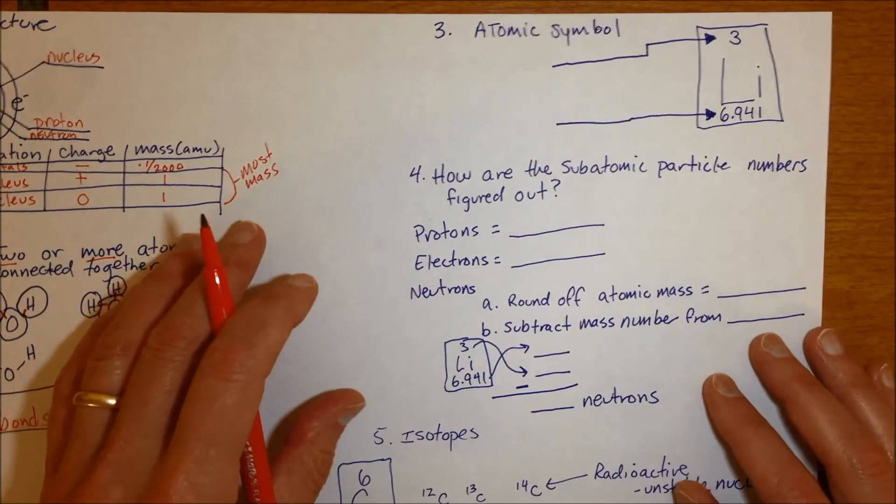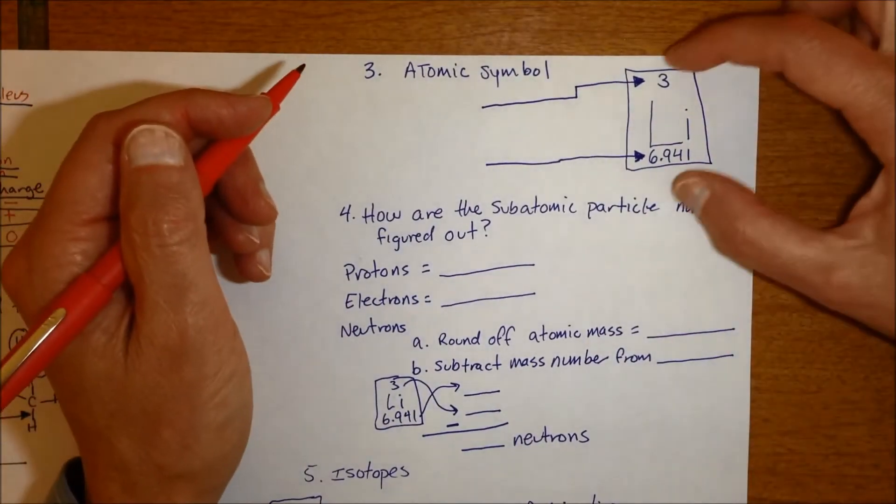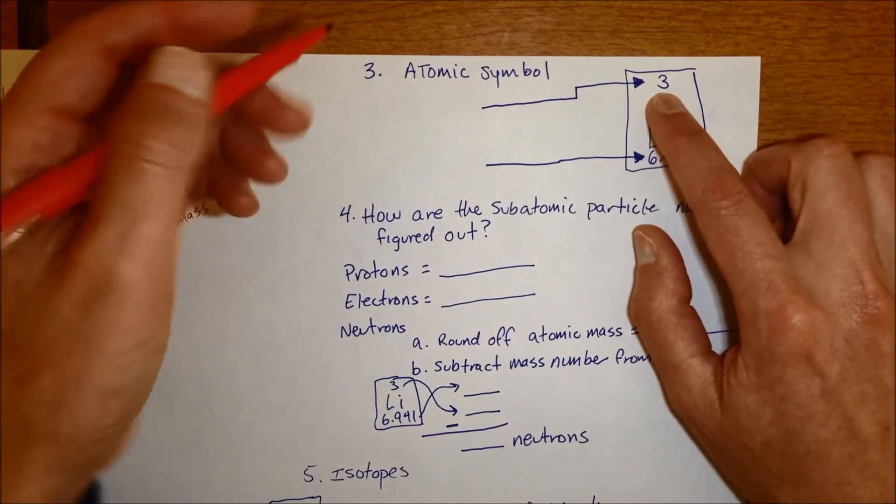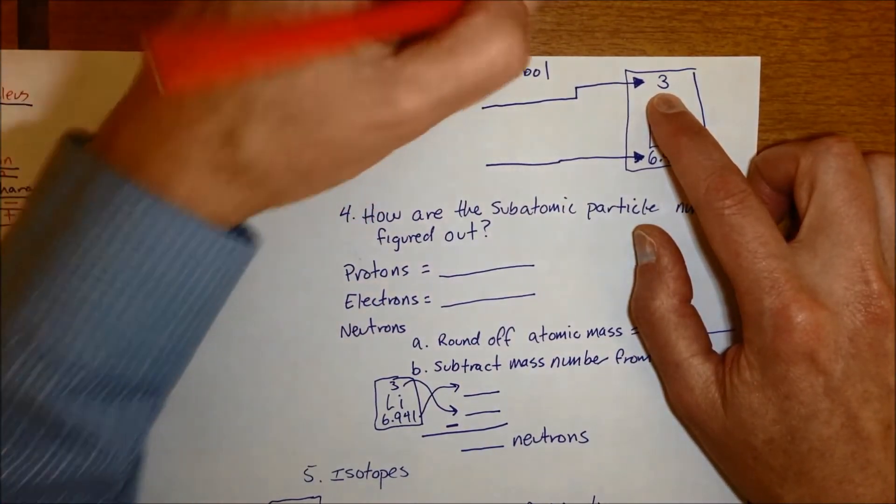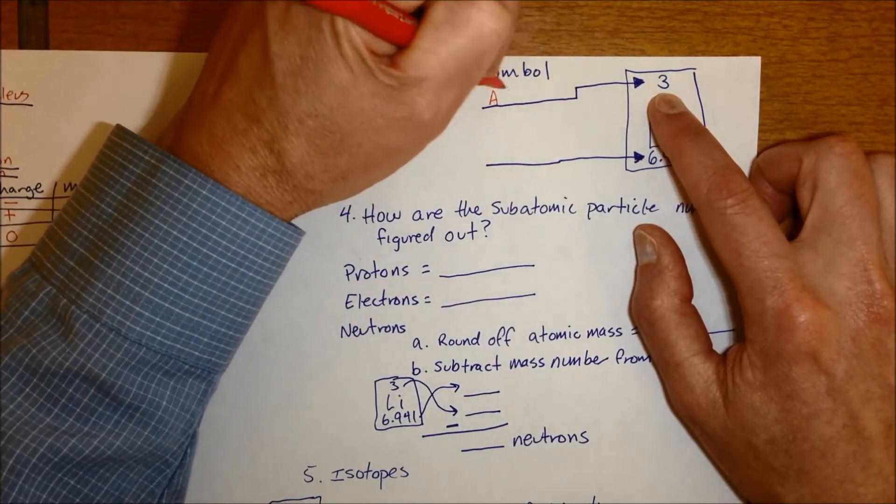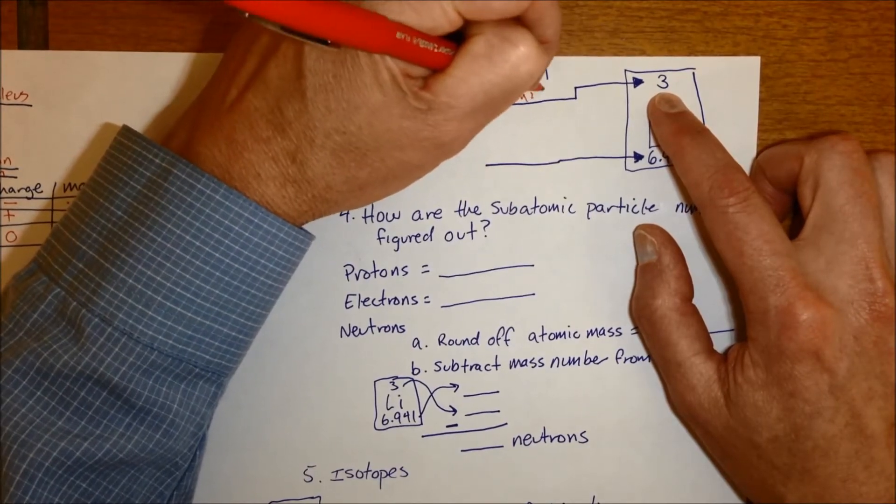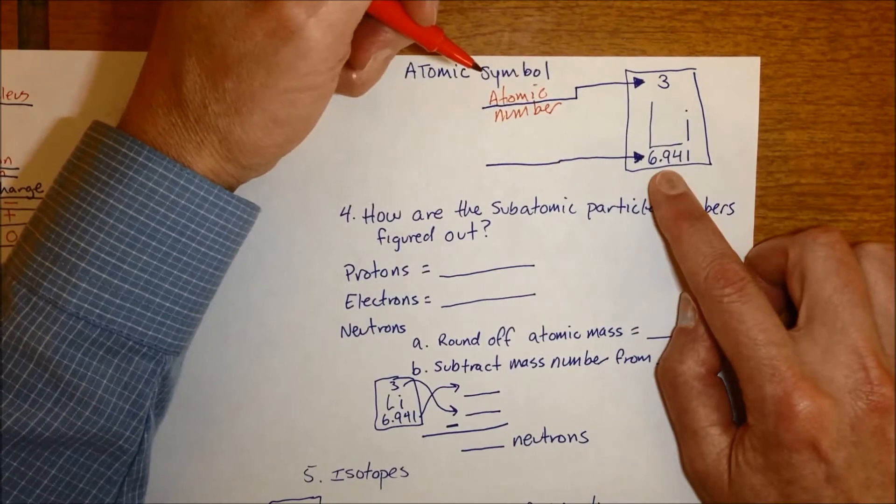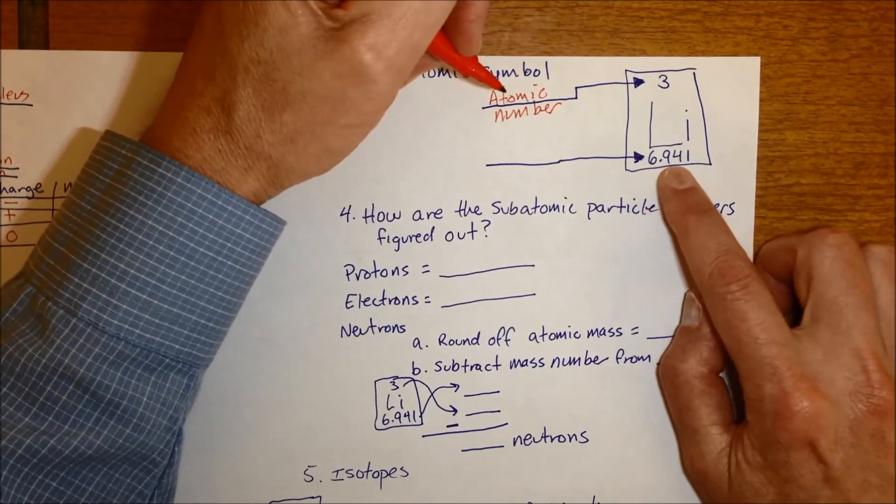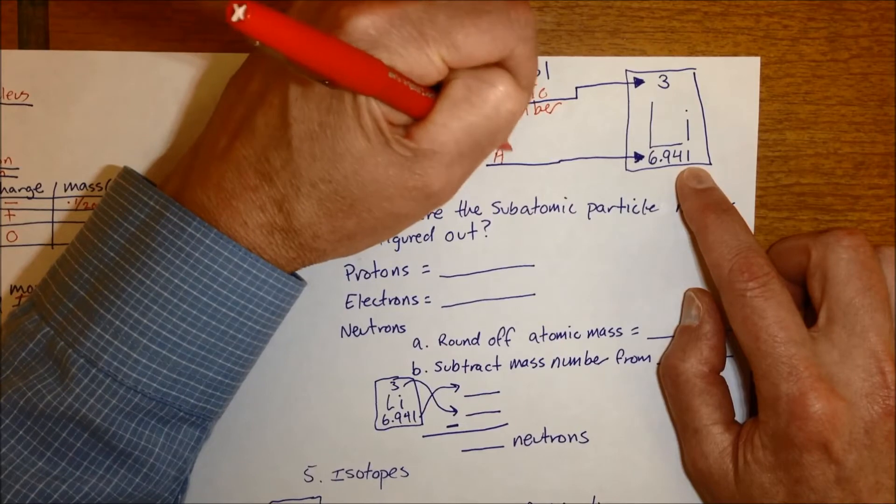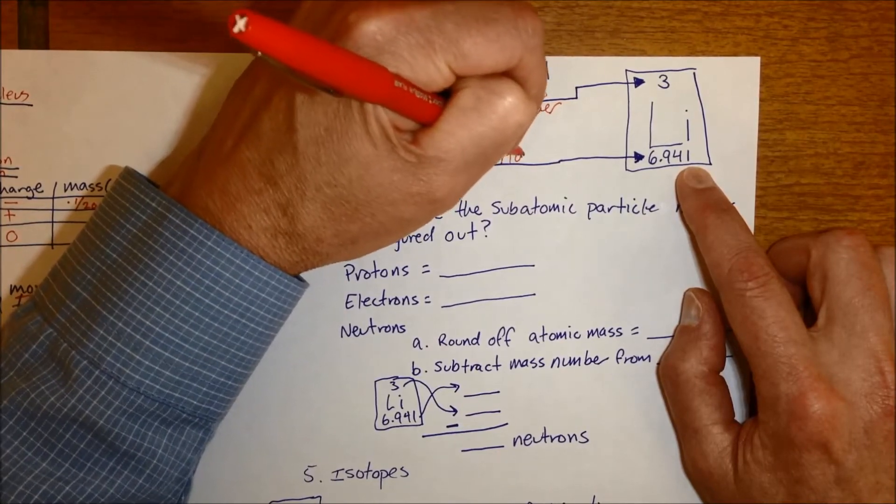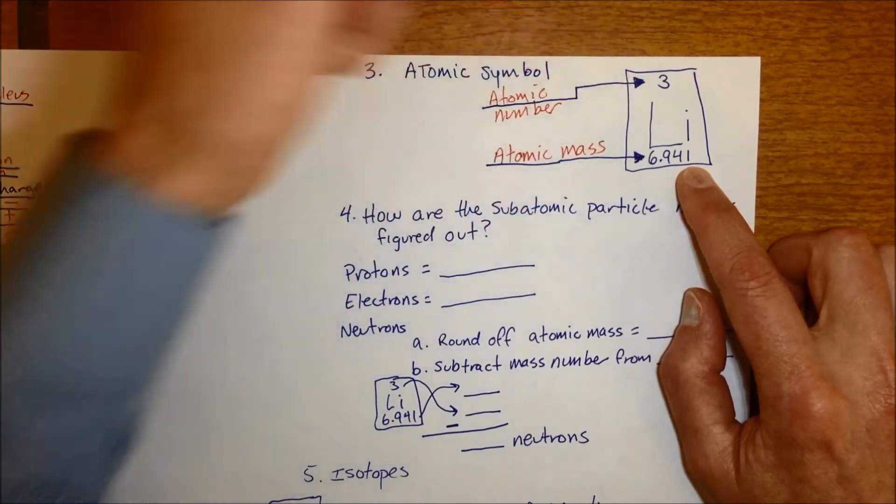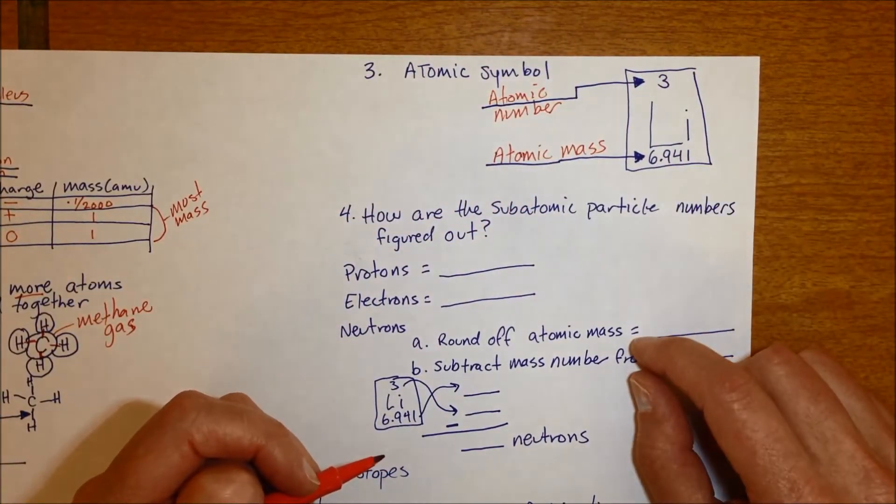When you look at the periodic table of the elements, you get a box like this for each element with some information about it. You have to know the top, the bigger number, the number that's not a decimal is the atomic number. And then the number in there that's a decimal, a very precisely measured number, is the atomic mass. So those are the two numbers in the periodic table.